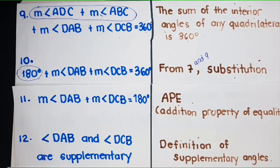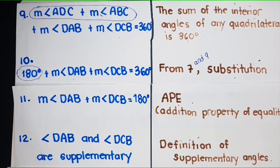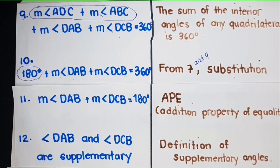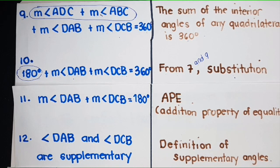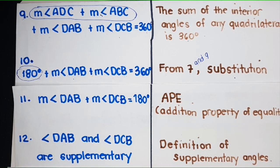This is the end of the proof of the statement: if a quadrilateral is inscribed in a circle, then its opposite angles are supplementary. If you have other requests, just send them in the comment section below. I hope you learned something from this video. Thank you for watching — see you in my next video.